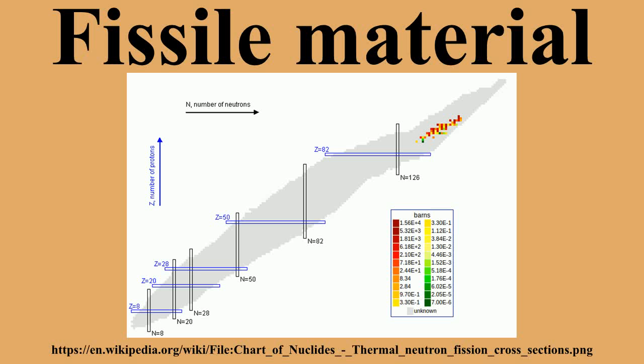Fissile nuclides do not have a 100% chance of undergoing fission on absorption of a neutron. The chance is dependent on the nuclide as well as neutron energy. For low and medium energy neutrons, the neutron capture cross-sections for fission, the cross-section for neutron capture with emission of a gamma ray, and the percentage of non-fissions are in the table at right.